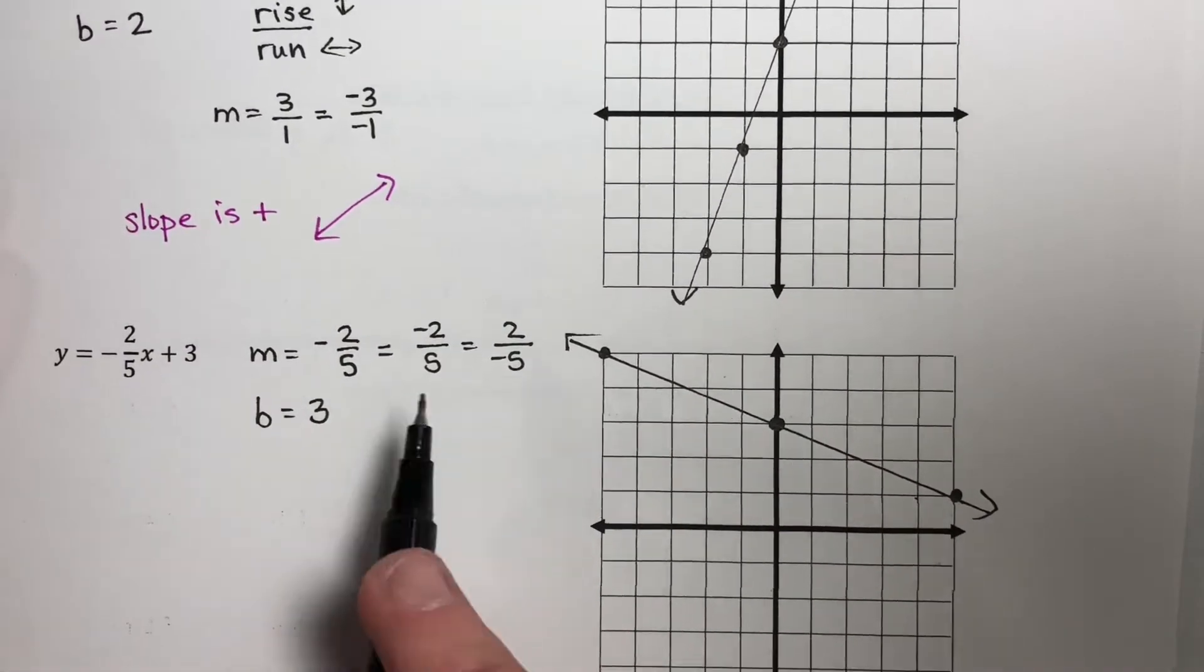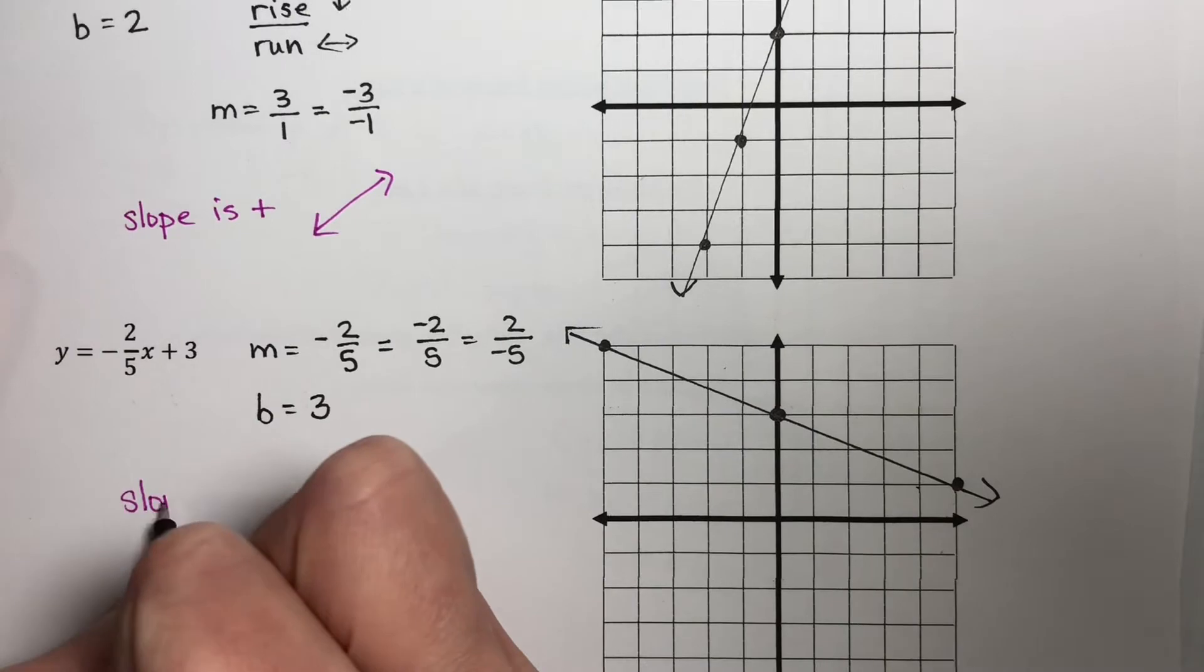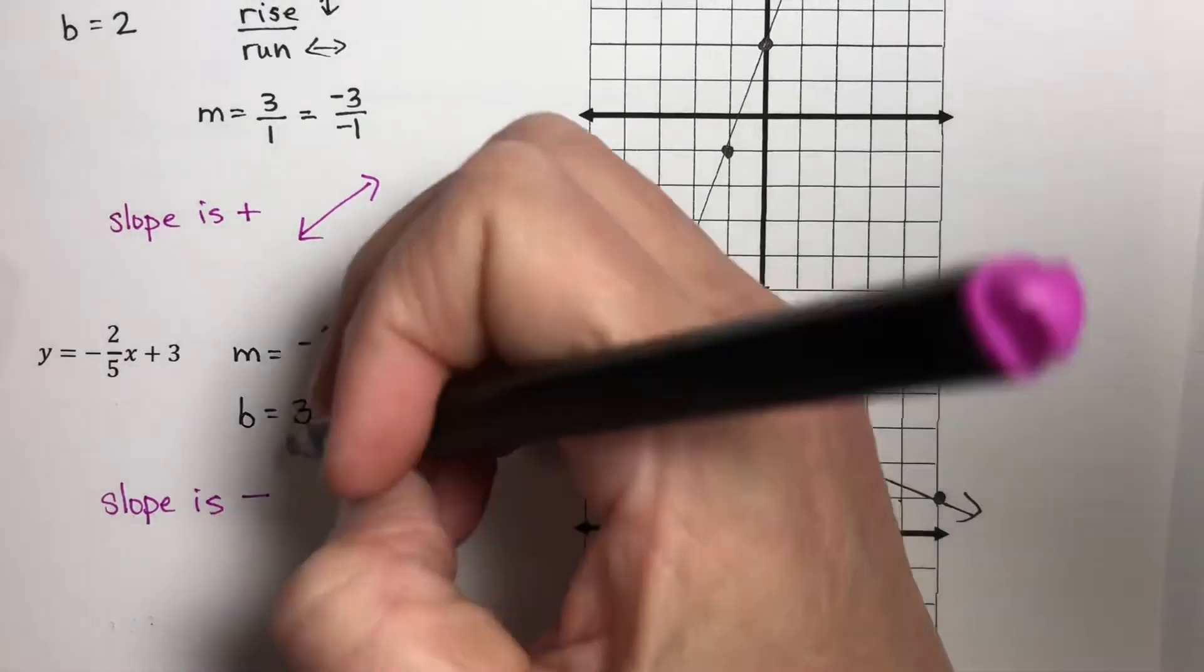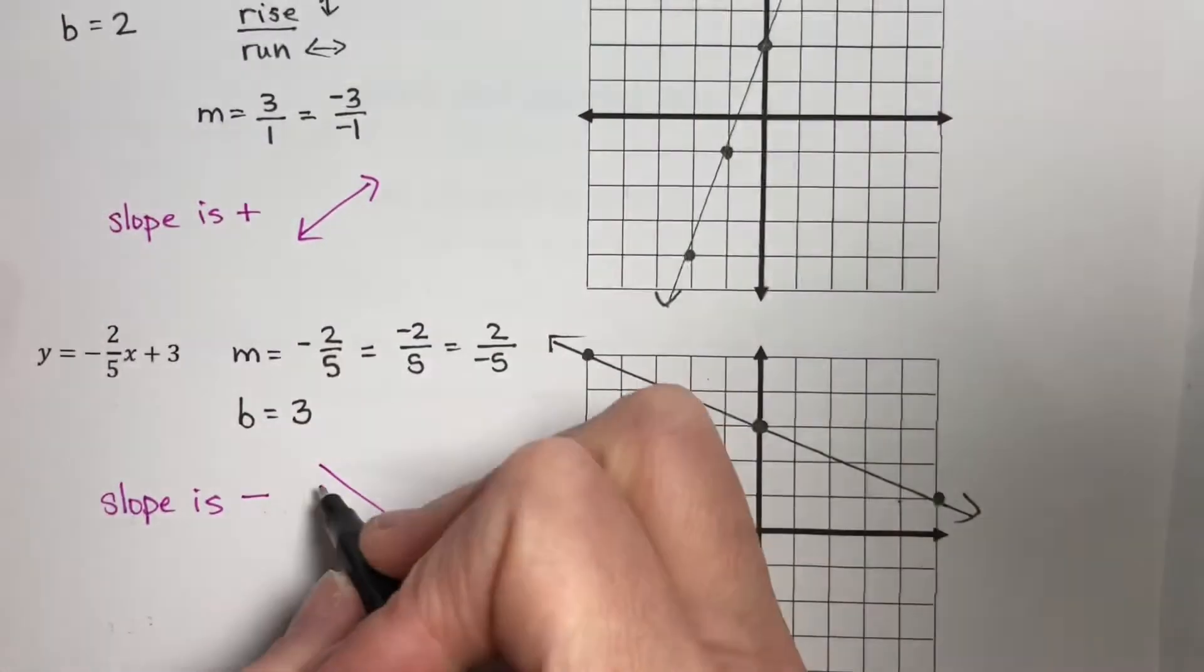Whereas if you have a negative slope, then your graph is going to be going down when you look at it from left to right.